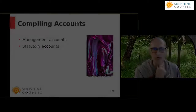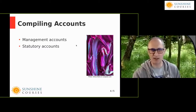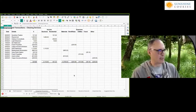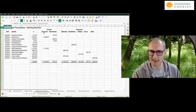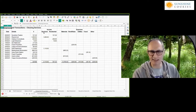So, when we compile accounts, we're looking at the management accounts and the statutory accounts. What I want to do now is show you how to prepare accounts based on the spreadsheets we prepared last week. Last week, we talked about how we categorize expenses based on what the business needs are, and we picked a cleaning business as an example to illustrate this income and expenditure account.